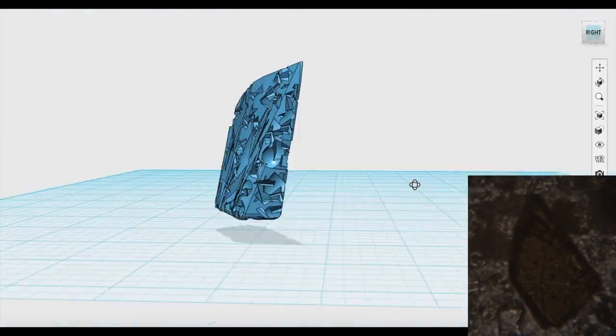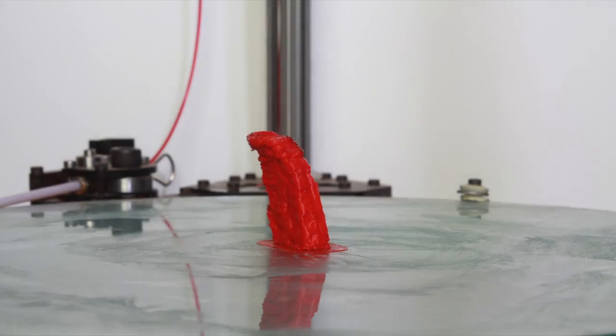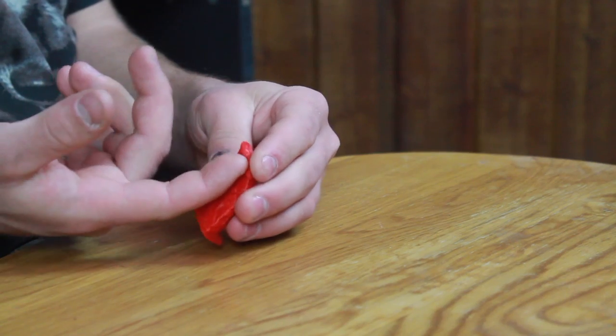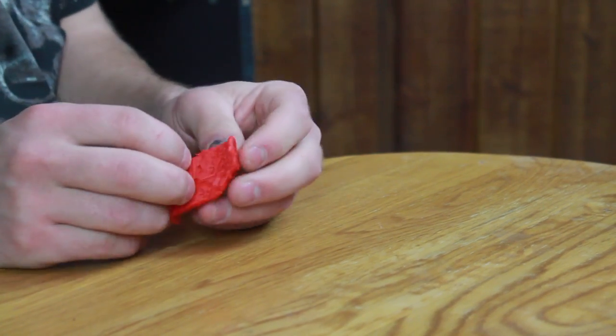So the model is done. Let's go ahead and get printing. So there's a problem with the part. Look. There's this bunch of melted plastic on the top of the part.